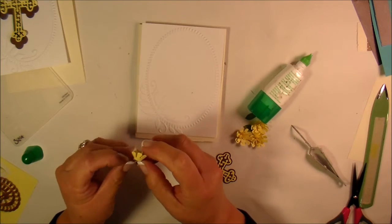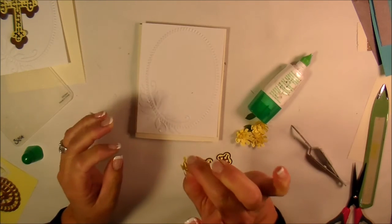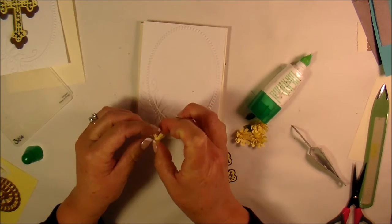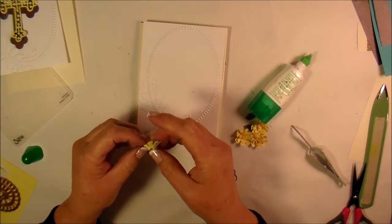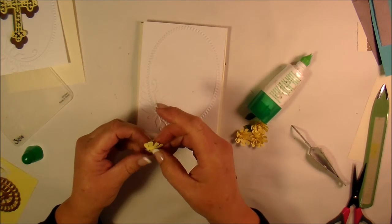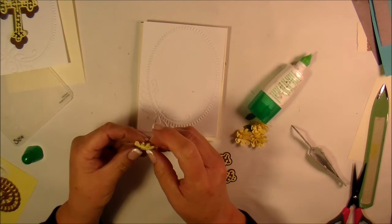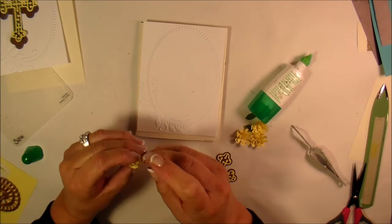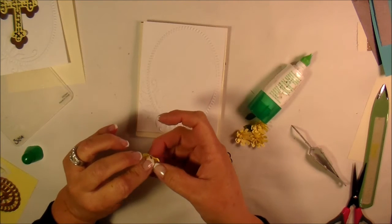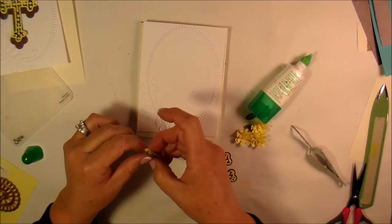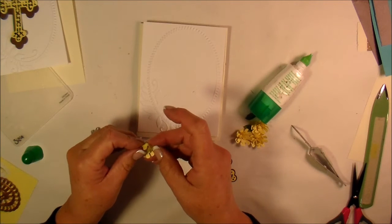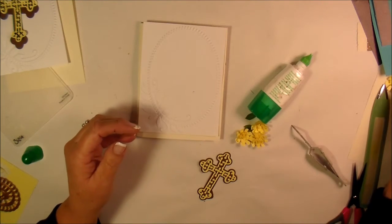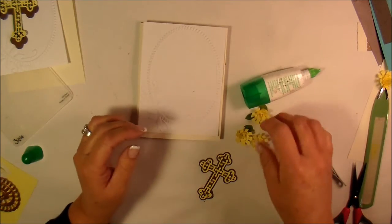And using glue, you can kind of just hold it together with your fingers like this until the glue starts to solidify or dry. And then what I do is I just, as it's drying, I just kind of hold it together and bring the petals out. And then you end up getting, set this aside, let it dry, these flowers here.